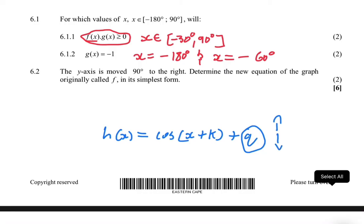If q is positive, you're going to move your graph up. If q is negative, you move your graph down. And for the value of k: